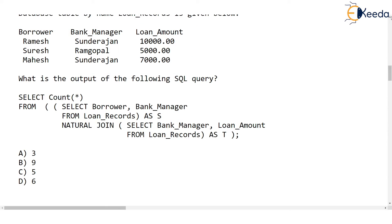In the second bracket, we are selecting bank manager and loan amount. We are not selecting borrower, but we are selecting bank manager and loan amount. This will be a temporary table returned by the second select statement and we call it T. So finally we have two temporary tables S and T, and we are doing a natural join between them.